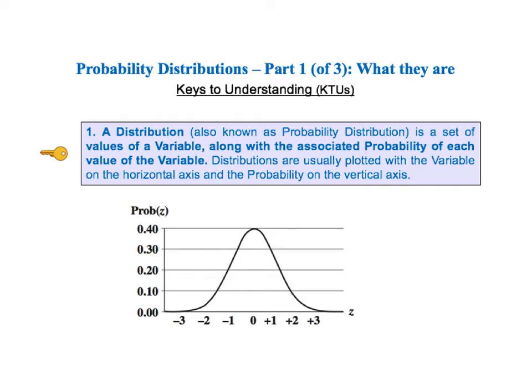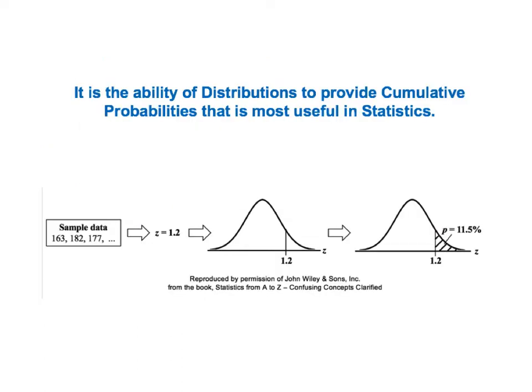These are point probabilities. The probability of a point value like the probability of z equals 0 or of z equals 1 or of z equals negative 1. The probability of an individual point is not that useful. But since a distribution gives us the probability of all the points on the horizontal axis, we can use calculus integrals to calculate cumulative probabilities. And cumulative probabilities are central to statistical analysis.